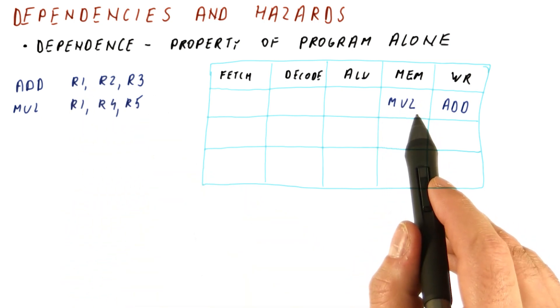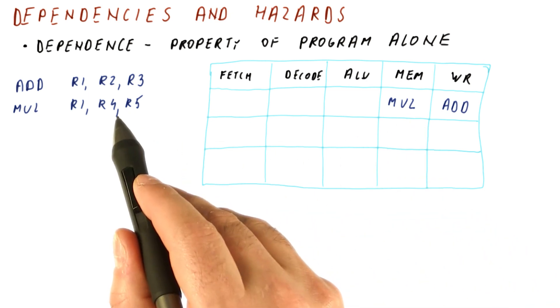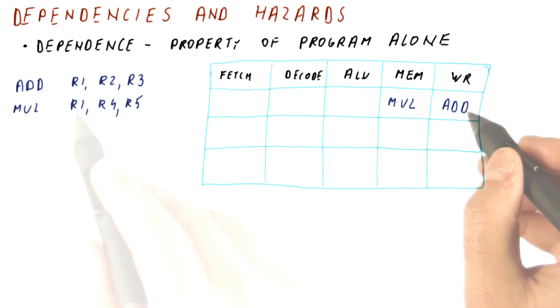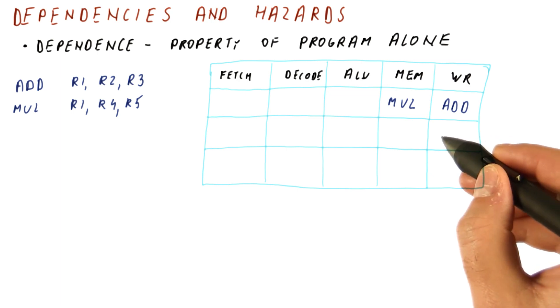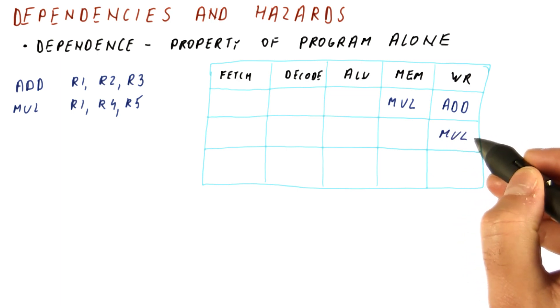And now it's just sitting in the mem stage because it's not a memory operation. It has the value that it will deposit in R1. When the add leaves the pipeline in the next cycle, the multiply will get here and have its write of R1.